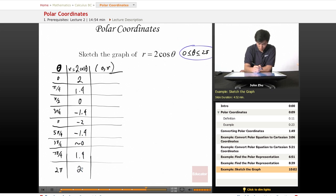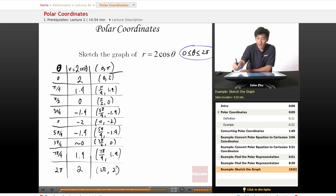Now we write the ordered pairs: (0, 2), (π/4, 1.4), (π/2, 0), (3π/4, -1.4), (π, -2), (5π/4, -1.4), (3π/2, 0), (7π/4, 1.4), and (2π, 2). And this column is the one we are looking for to graph.